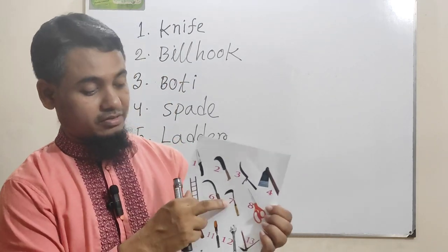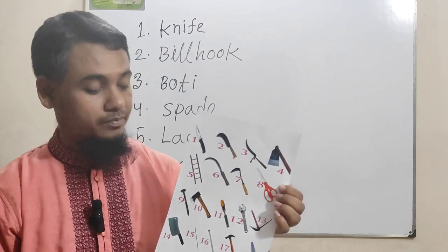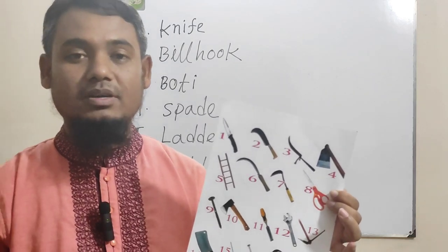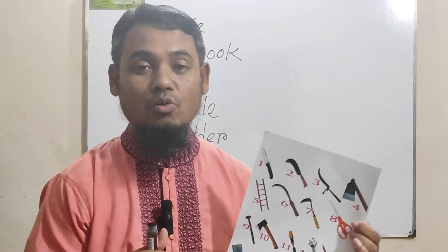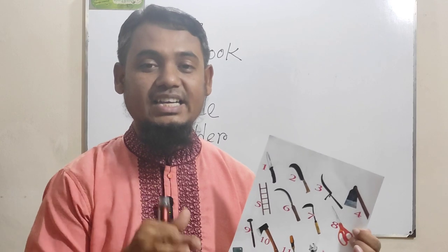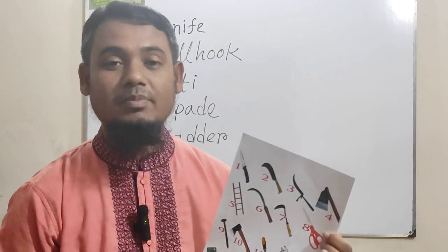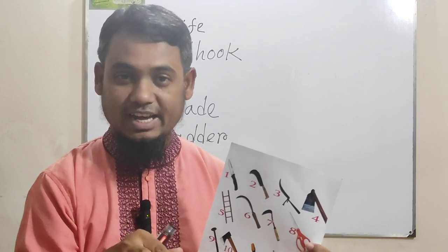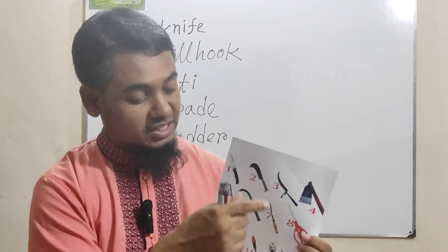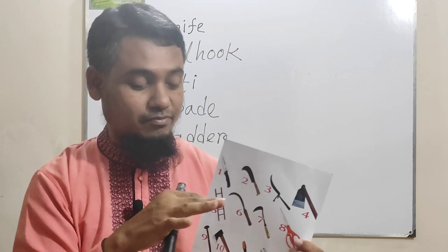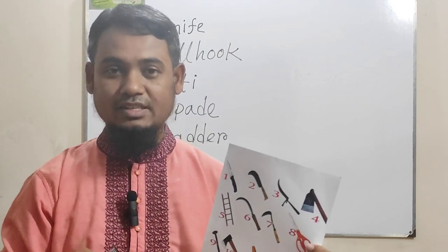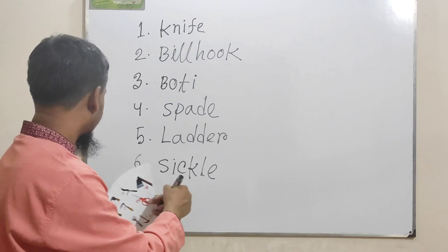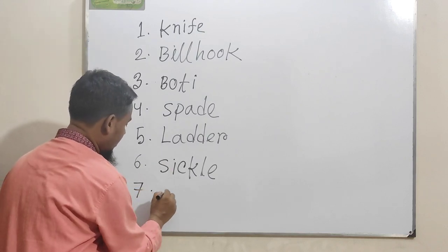Picture number seven is hoe. Hoe is used by the farmer to weed out grass from the crop land — that means it is used to remove unnecessary plants from crop lands. This tool name is hoe, number seven.